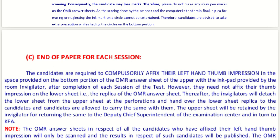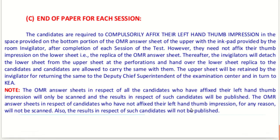At the end of each session, candidates must fix their left hand thumb impression in the space provided on the bottom portion of the upper OMR answer sheet using the ink pad provided by the invigilator. The thumb impression is only needed on the main sheet. Invigilators will detach the lower sheet and hand it to candidates, who are allowed to carry only the lower carbon copy. Only if the left hand thumb impression is applied will the OMR be scanned and results published.